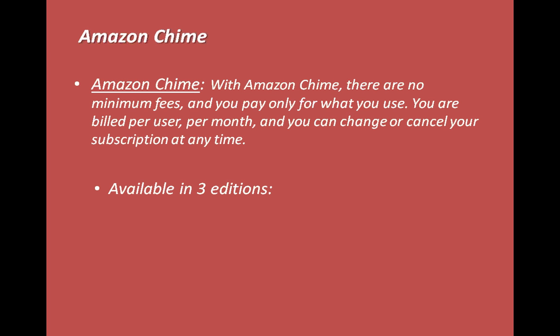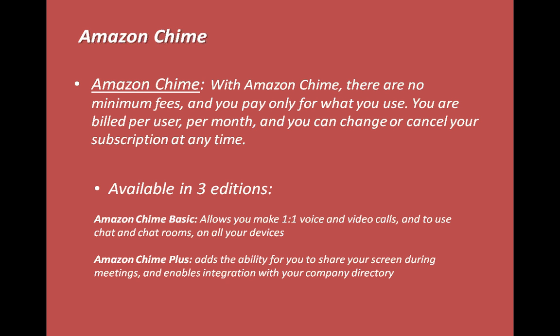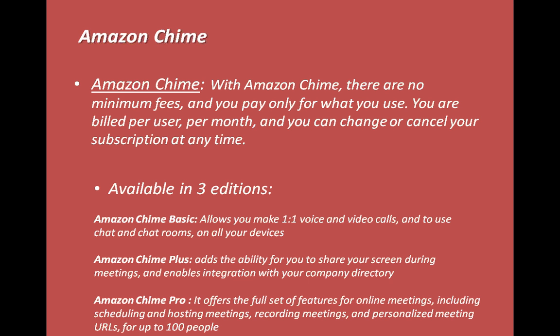Amazon Chime is available in three editions as of now. The first is the Basic version, which helps you make one-on-one voice and video calls and use chat rooms on all your devices. Another is Amazon Chime Plus, which adds screen sharing during meetings and integrates with your active directory users. The third is the Professional service, which offers a full set of features like online meetings, recording, scheduling, and setting up a personal meeting for up to 100 people.